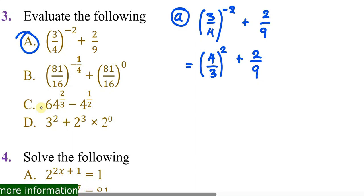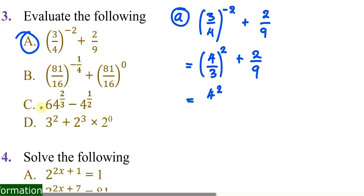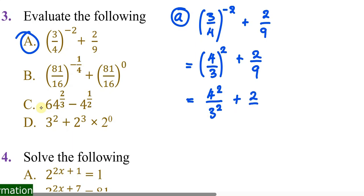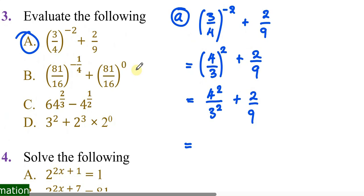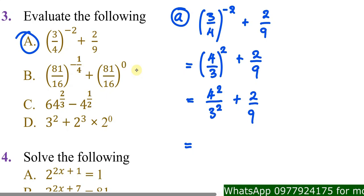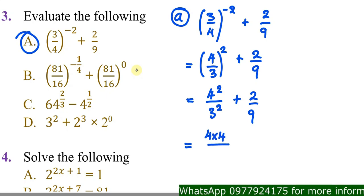From there, note that 4 is also raised to the power 2, and 3 is also raised to the power 2. So you write: 4² over 3², plus 2/9. Then evaluate: 4 to the power 2 is 16 — that means 4 times 4 — and 3 to the power 2 means 3 times 3.